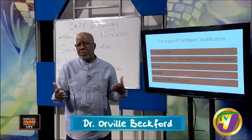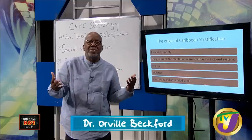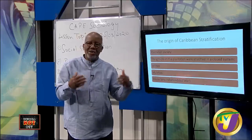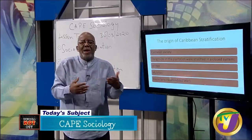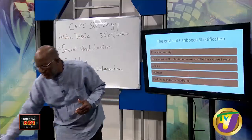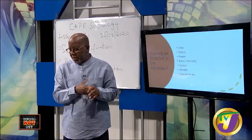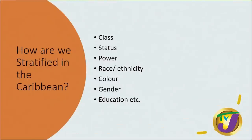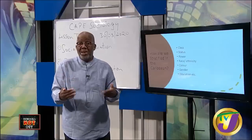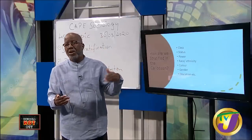We still have whites at the top, followed by what we call the browning class, then blacks at the end of the spectrum. That upper-class tier is not determined by money but by ascription. In the Caribbean, we are stratified by class, status, power, race, ethnicity, colour, gender, education, and geography. Depending on where you live, there are certain jobs you can get and will not get. When you are from certain areas, there are stigmas attached to you.